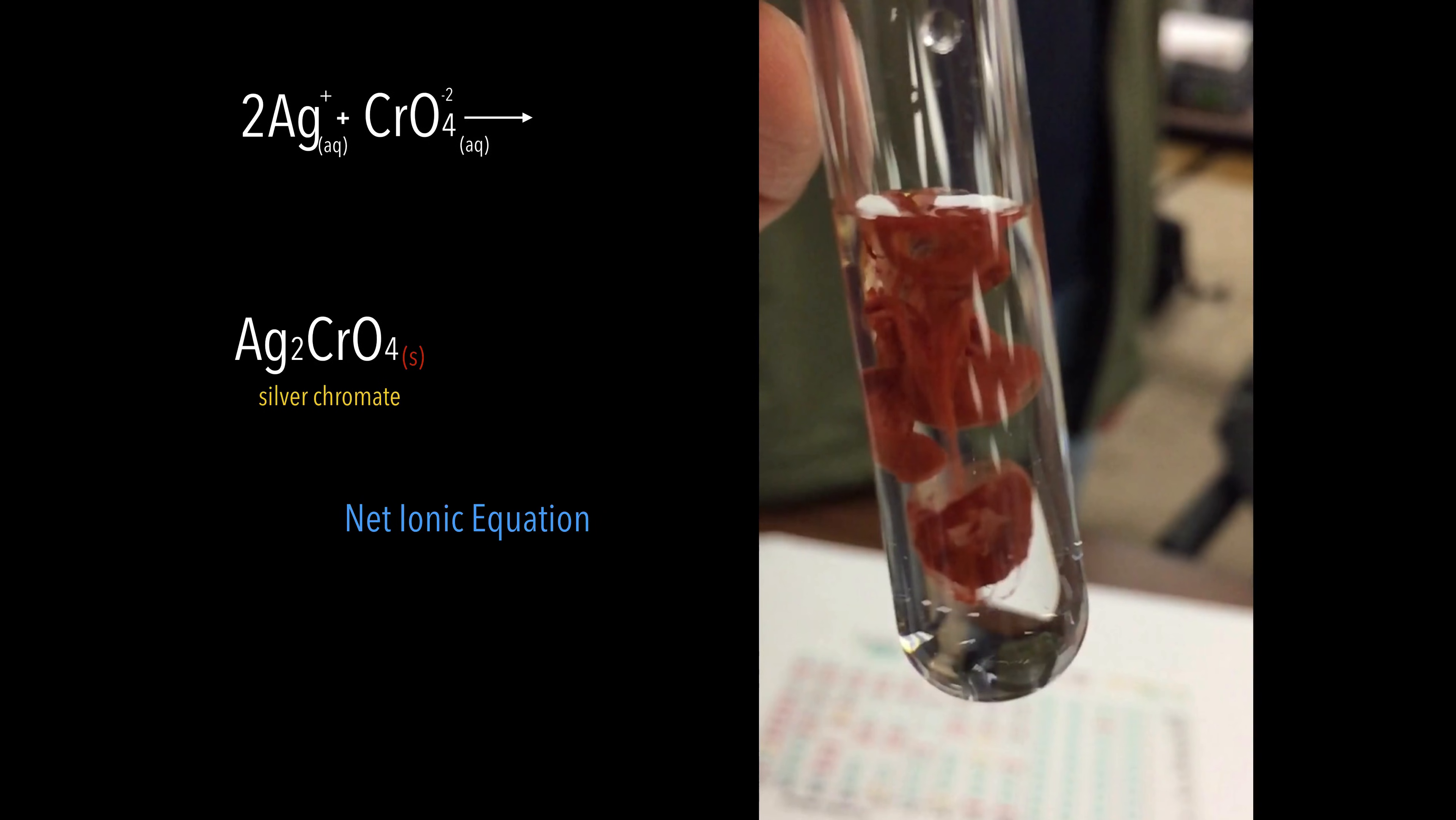I have silver aqueous plus chromate aqueous reacts to make silver chromate solid. That net ionic equation eliminates spectator ions, leaving only those involved in the reaction.